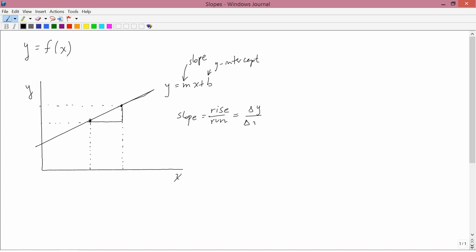The run, mathematically, delta x. Where delta, this is the uppercase Greek letter delta that looks like a triangle, is the mathematical notation for change in. So delta y is the vertical change. Delta x is the horizontal change. So the slope is delta y over delta x.